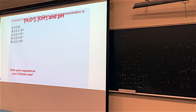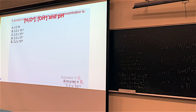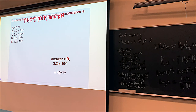We have a solution with a pH of 4.50, and we want to calculate the hydronium concentration. You would do 10^(−4.50), which comes out to be 3.2×10⁻⁵ mol/L. Alright, let's take a break. It's about 9:53; we'll be back at 9:58.